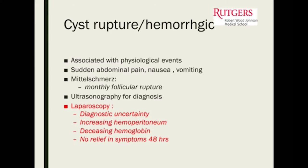Hemorrhagic cysts can also cause acute pelvic pain. We don't necessarily have to operate on hemorrhagic cysts, or even on non-hemorrhagic ruptured ovarian cysts — they tend to cause acute pain and then resolve. We really only have to operate if we think the patient is continuing to bleed internally.